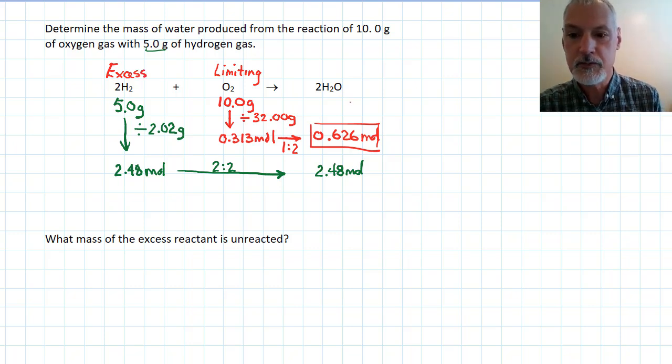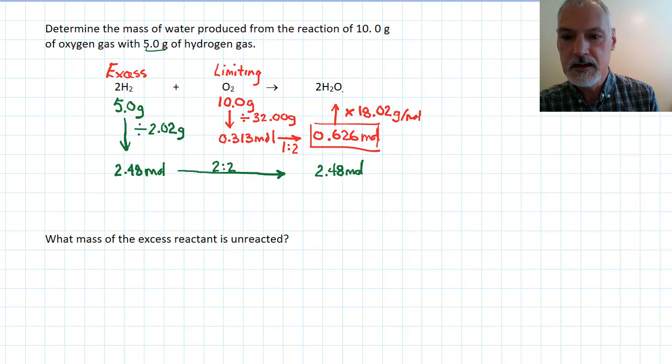In order to determine the amount of product I'm going to make, I must always use my limiting chemical. So I'm going to use that information and the molar mass of water and multiply the 0.626 by our molar mass of water. And I arrive at 11.3 grams of water.